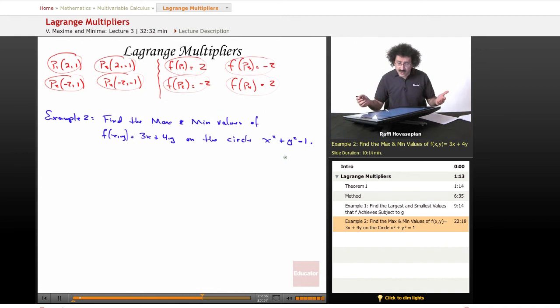Find the max and min values of this function on the circle x squared plus y squared. This function 3x plus 4y is defined for the entire plane, but we want to constrain it and find the maximum and min values on this circle. Somewhere, some point on this circle is going to maximize this function, and some point on this circle is going to minimize this function - f subject to the constraint g.